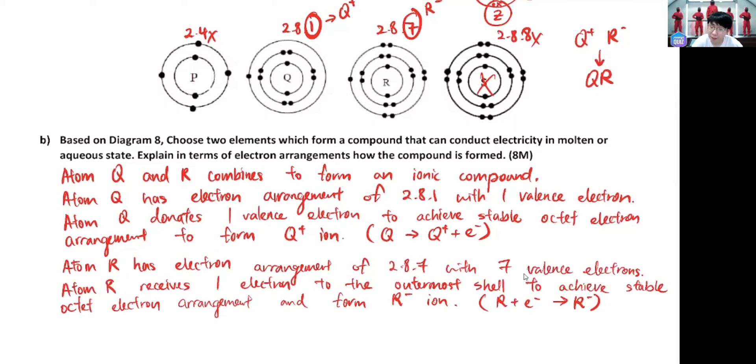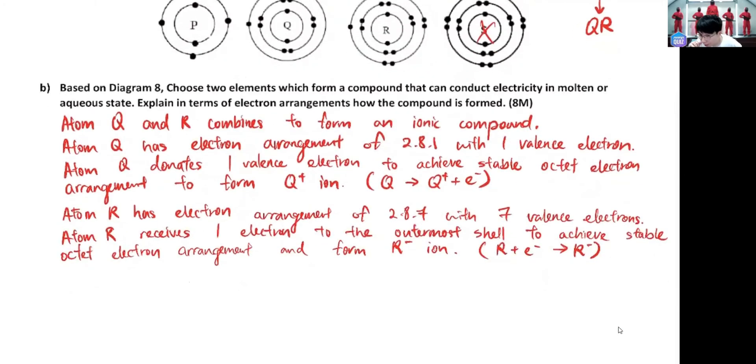So I will say it's not that hard, right? But guys, we are not done yet. You still have to combine like the Q+ and R-. So how many Q and how many are this? Some we mentioned one Q and one R. So one atom, sorry, one Q+ ion combines with one R- ions.